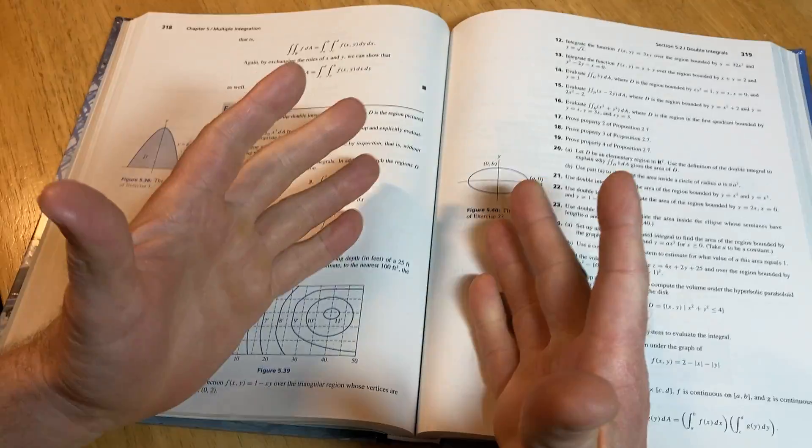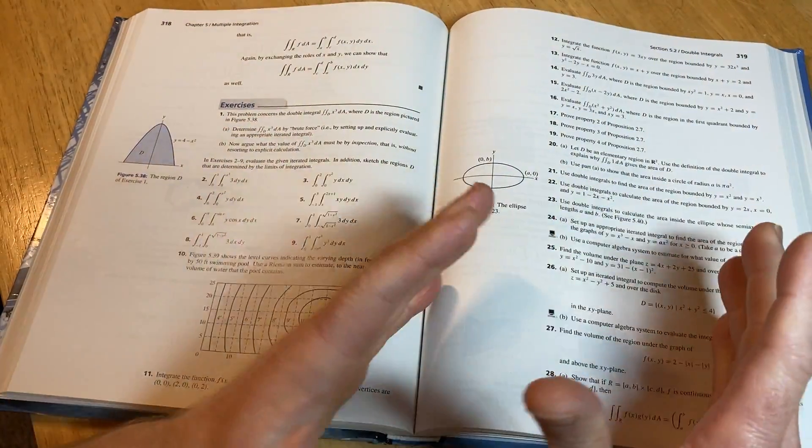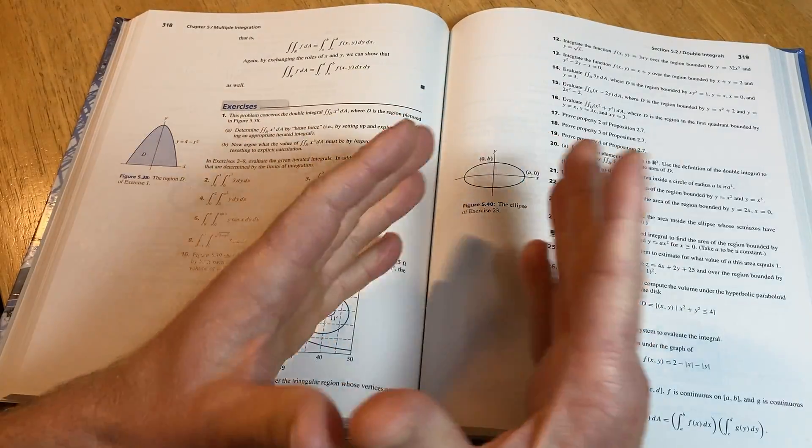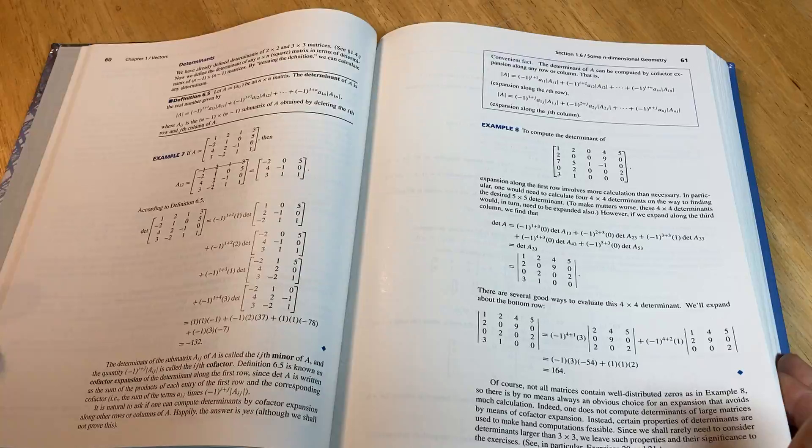This book has so much more information. In fact, books, they have more information than courses do, textbooks, because in a course, you can only cover so much. In a book, the author can just write it all down, and whether or not it's all covered in class, it's a different story. They provide, I feel like books provide a lifetime of knowledge.